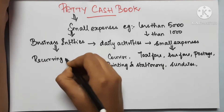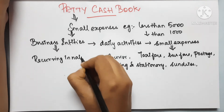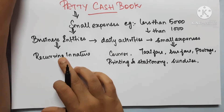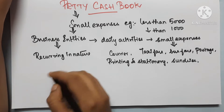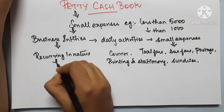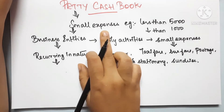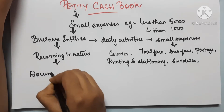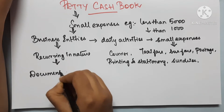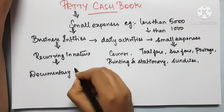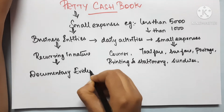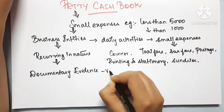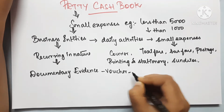The expenses are made of the same recurring type. The next important point is that we have to collect all small expenses with documentary evidence. So if we have a voucher or bills, we have to collect that evidence. Voucher or bills are required.